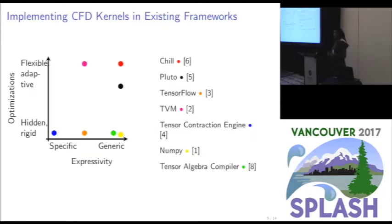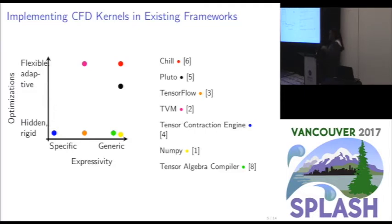Since there are already existing tools that could be useful for that — this is a non-exhaustive list — we have different tools with different levels of expressivity and optimization heuristics. For instance, taking CHILL and TVM, they don't have the same level of expressivity, but CHILL is much more expressive in the sense that it operates at a lower level of abstraction.